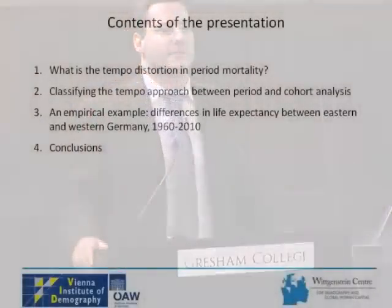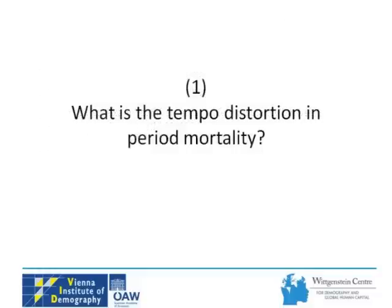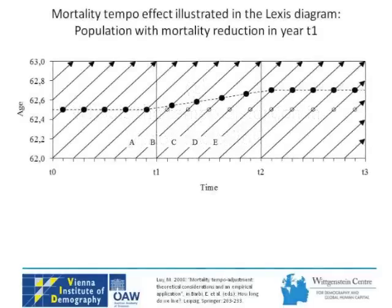I'm trying to put this together in the presentation. I've prepared three issues for this lecture: first, what is this tempo distortion in period mortality that Bongaarts and Feeney describe - using a simple theoretical model. Second, to understand what this adjustment they suggest is doing, I'll classify this tempo approach between period and cohort analysis. Finally, I'll look at the empirical application: does it really matter, and do we get different results when we take this tempo adjustment into account?